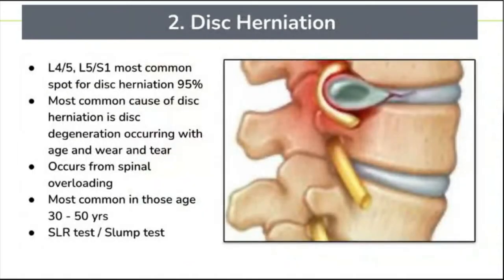Number two is disc herniation. Usually about 95% of the time it happens at the L4-5, L5-S1 segment, which is right at your very low back, right before your tailbone. It can be degenerative, occurring with age and wear and tear. Usually what happens is it occurs from spinal overload when your back and spine aren't ready or can't handle those forces. It's really common in those a little younger — 30s to 50s.